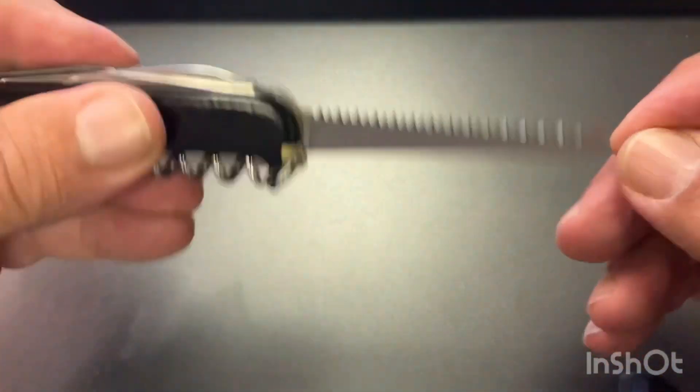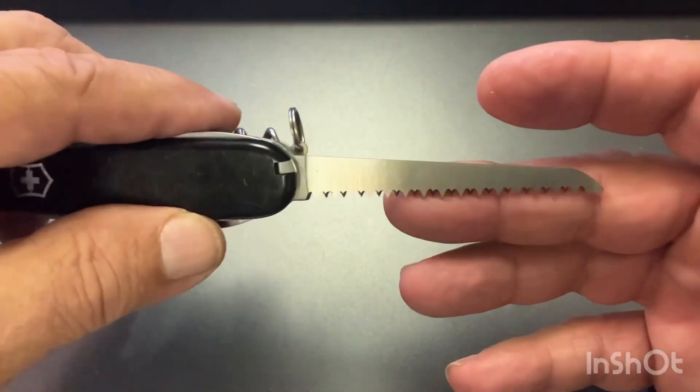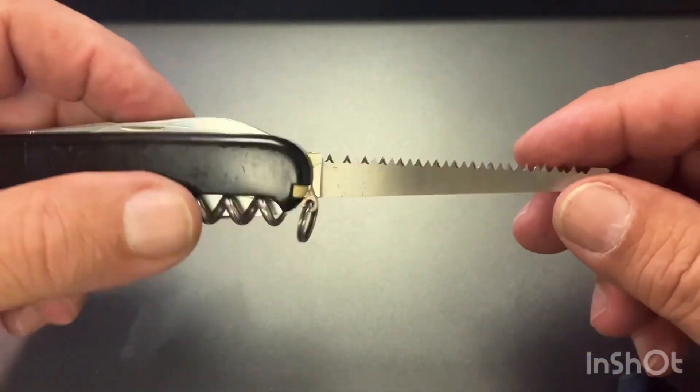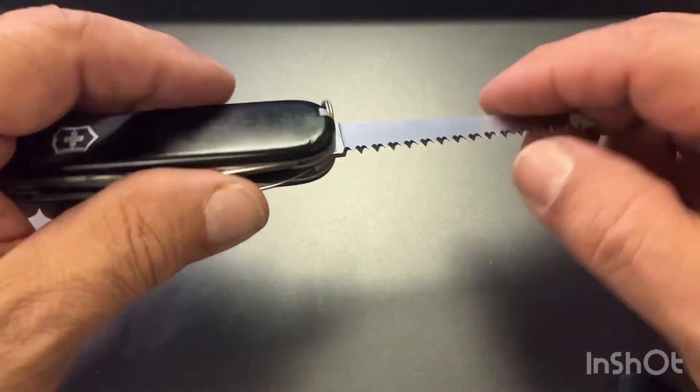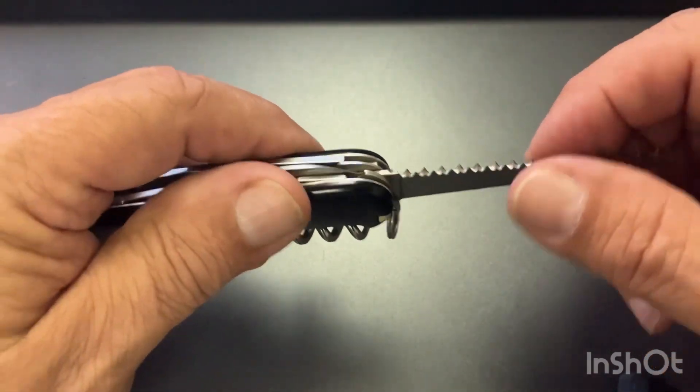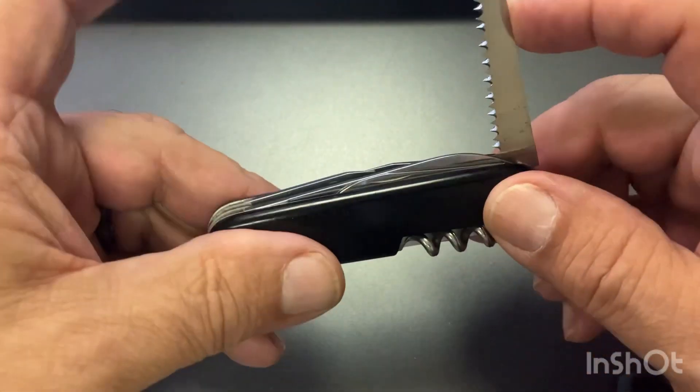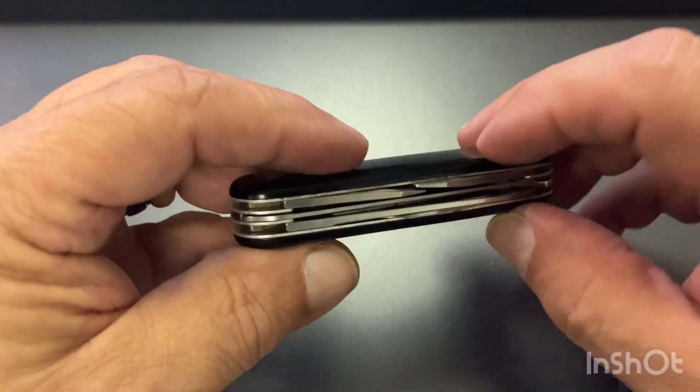It has a saw, and these saws are really good on the Victorinox. They're great for, especially like in the yard or in the woods, sawing small branches, or you could even probably do a two-by-four with it if you had to.